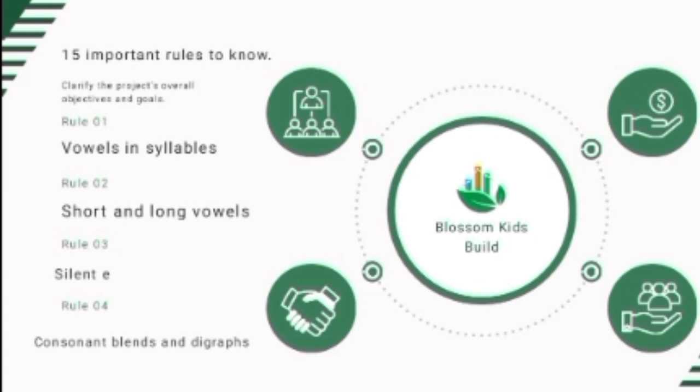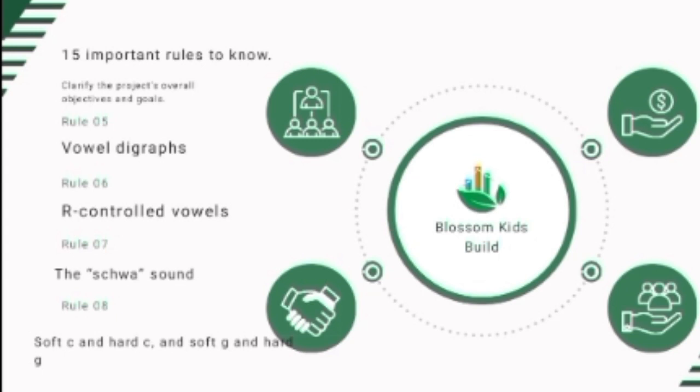Rule number five: vowel digraphs. In a vowel digraph, two vowels are side by side — the first vowel is long and says its name, while the second vowel is silent. When two vowels work together, the first one says its name while the second is silent. For example, the word 'boat' — B-O-A-T. The O-A there is a vowel digraph. The first vowel says its name while the other is silent.